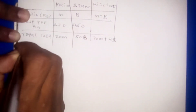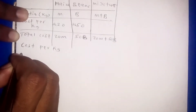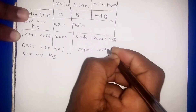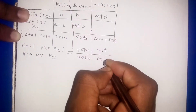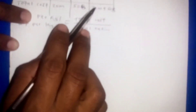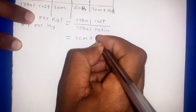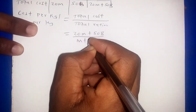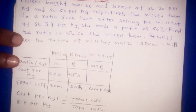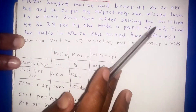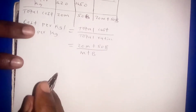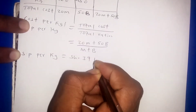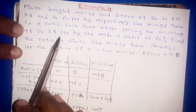The buying price per kilogram is the total cost divided by the total ratio, giving us (20M + 50B) divided by (M + B). We are also told that she sold the mixture at 39 shillings per kg, so the selling price per kg is 39 shillings.